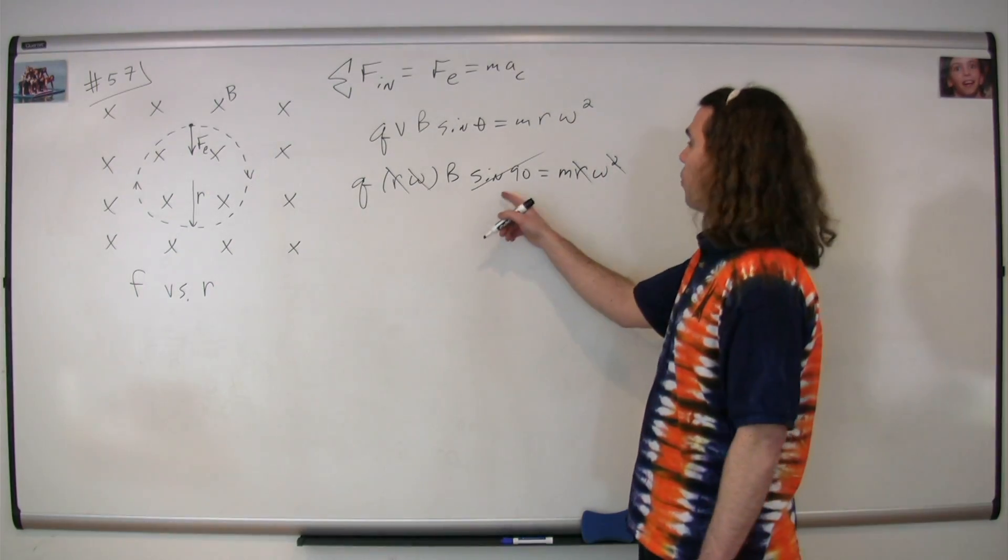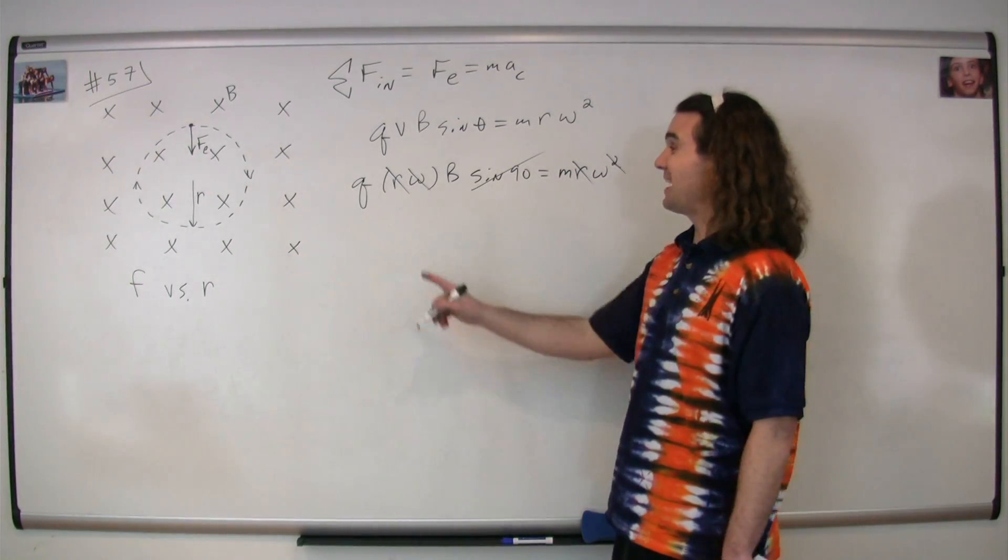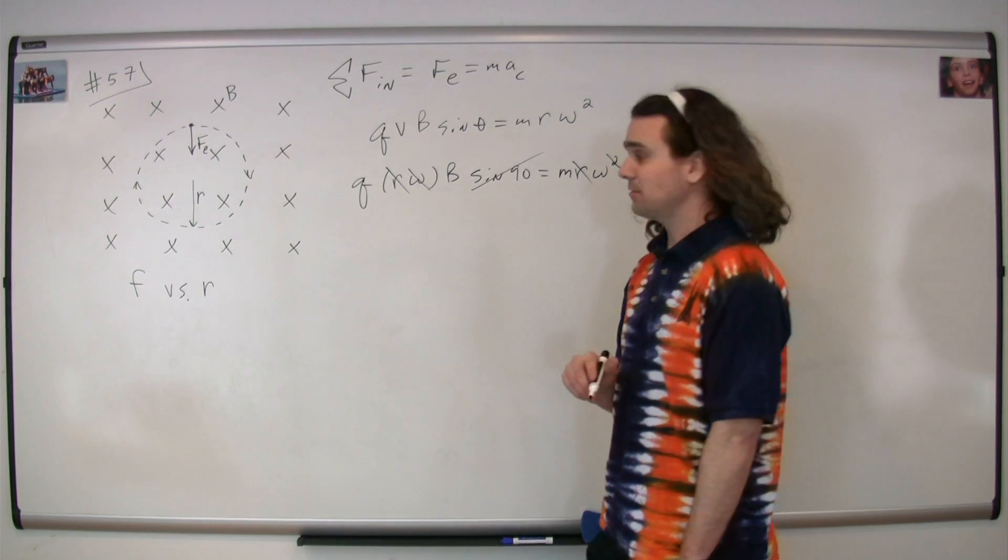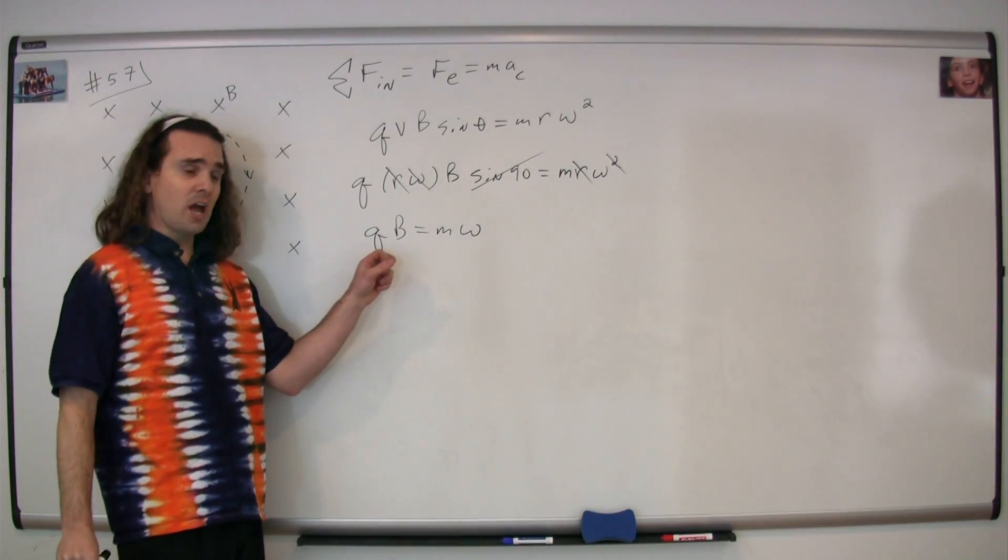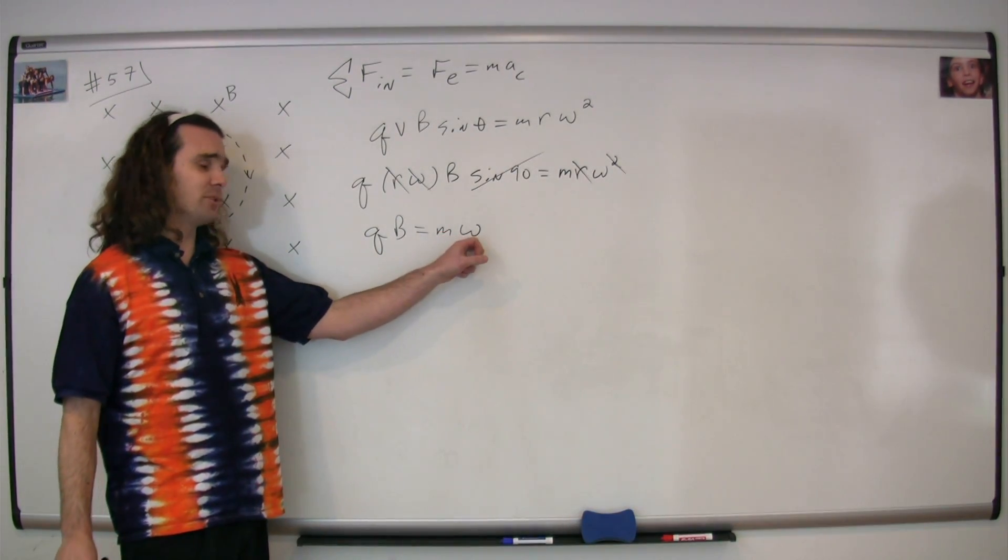The sine of 90 is 1. You can cancel out a radius from both sides and an angular velocity from both sides, and now we have the charge times the magnetic field is equal to mass times the angular velocity.